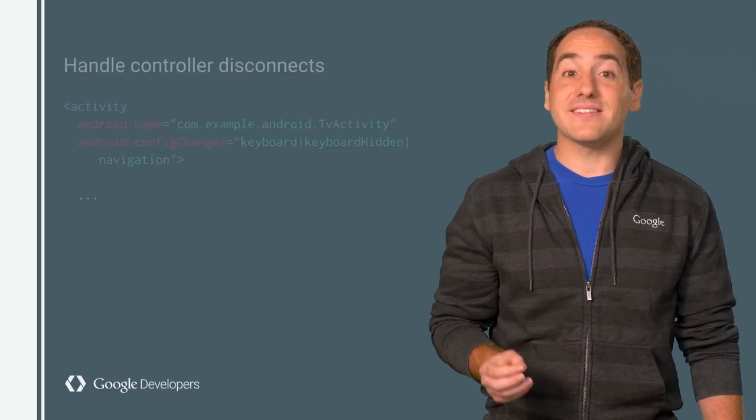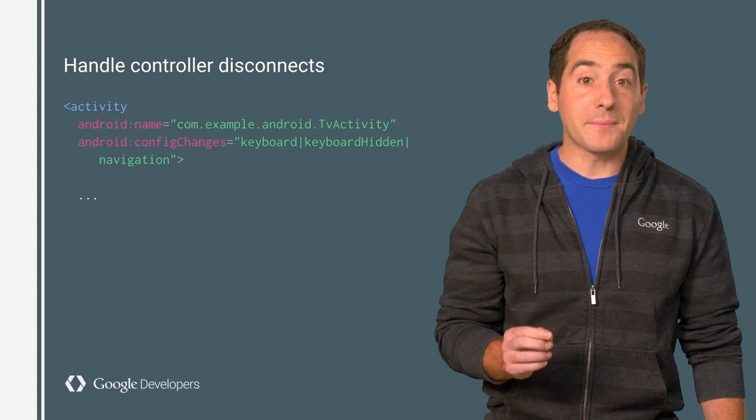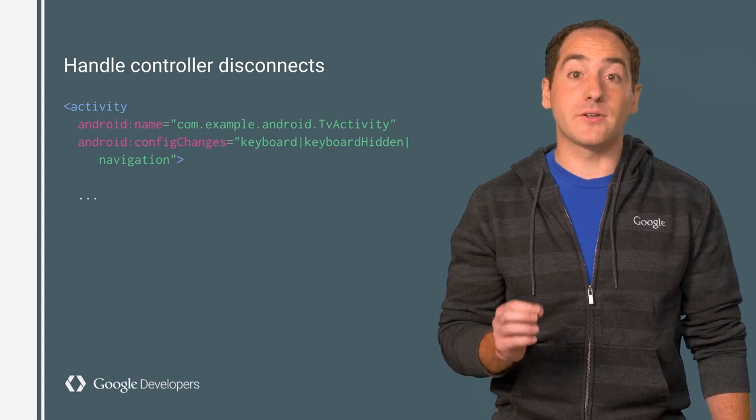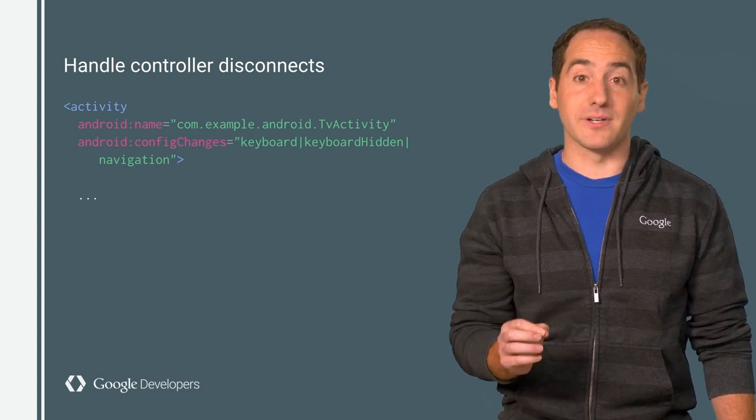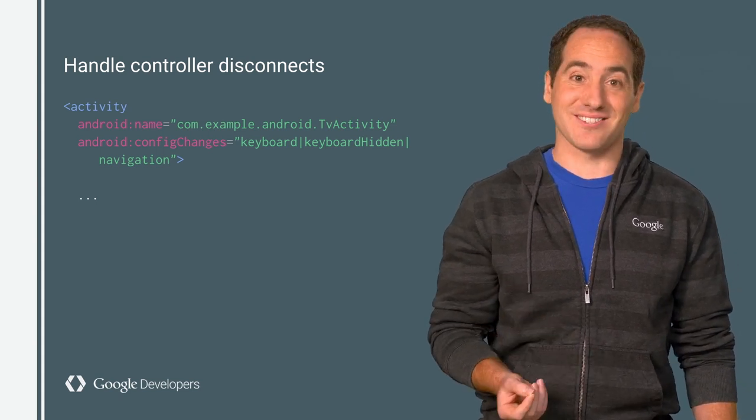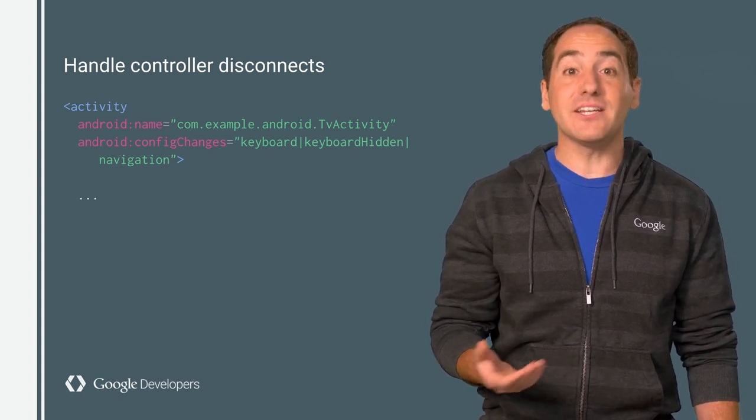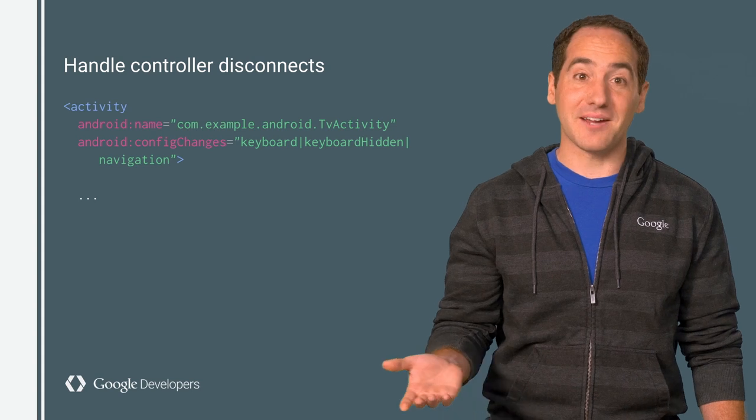Here's something else to be aware of: TV controllers periodically save energy by going into sleep mode. When this happens, they disconnect from the TV. To prevent this event from interrupting your game, you can subscribe to it by adding these lines to your manifest. Then you can handle it in your game.